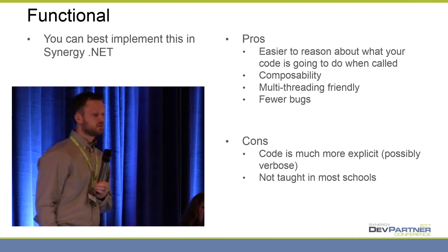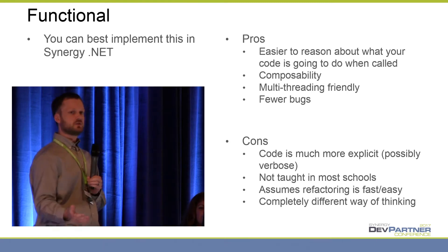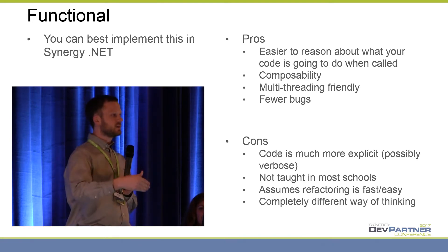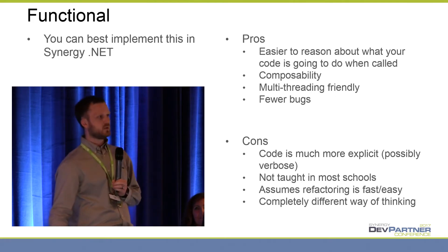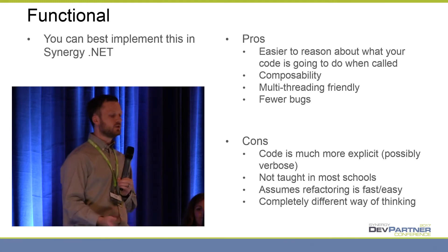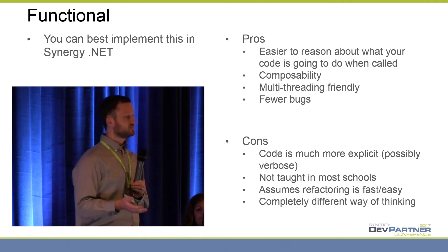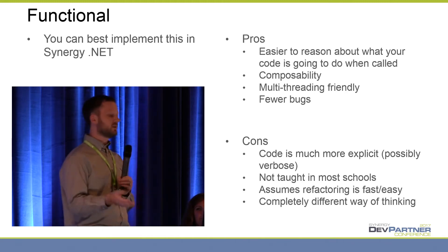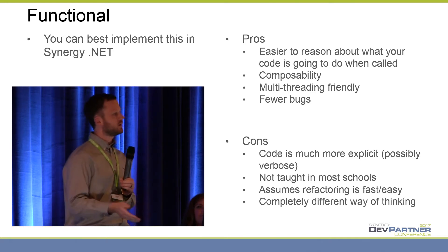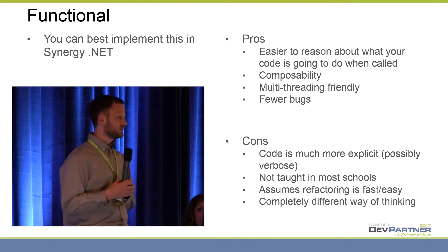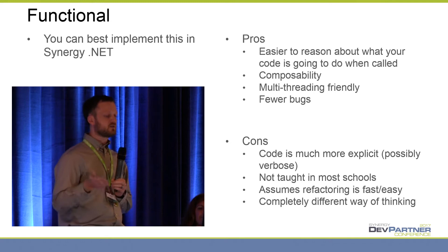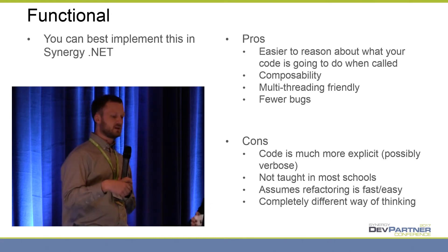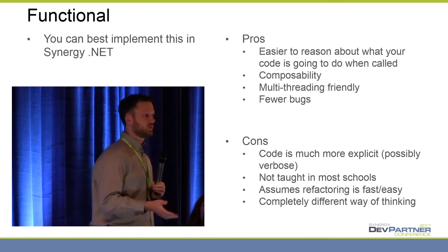We do have some downsides. Code is much more explicit — if I need some data, I need to be explicitly handed that data. Call sites can get a little bit verbose. If you just need to add a little bit of state from the very top of your application all the way down to the bottom, that can mean a lot of places where you need to add a new parameter. Sometimes you have to write a lot of code. It's not taught in most schools, so some people coming out of school won't be familiar with it — it's nowhere near as ubiquitous as object-oriented programming. It also very much assumes that refactoring is fast and easy, and it's a completely different way of thinking about the problems you have at hand.